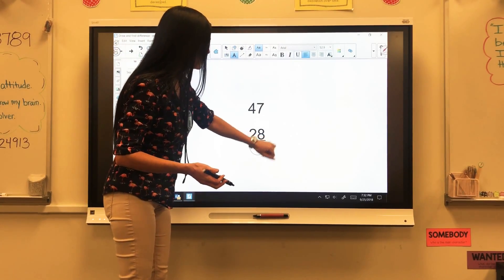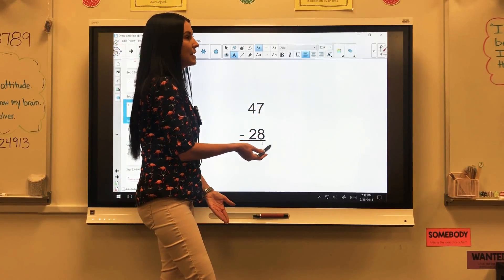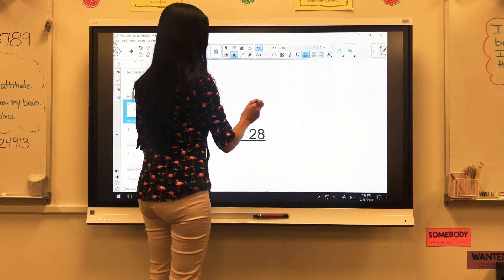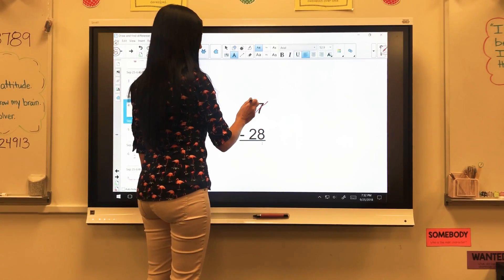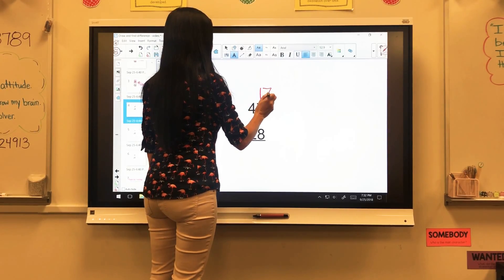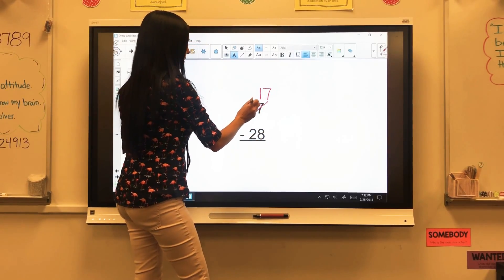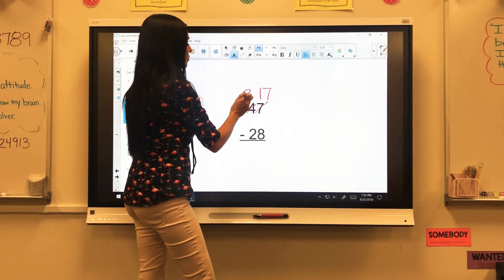We need to look at it and realize, well, if I have 7 of something, I can't take 8 away from that. So I need to regroup. I'm going to cross out my 7 and I'm going to borrow a 10 from over here and that 7 plus 10 is 17. If I took a 10 from here, that's no longer a 4. It's going to be a 3.